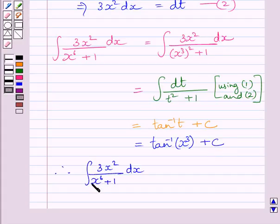Therefore, ∫ 3x²/(x^6 + 1) dx = tan⁻¹(x³) + C. This is our required answer.